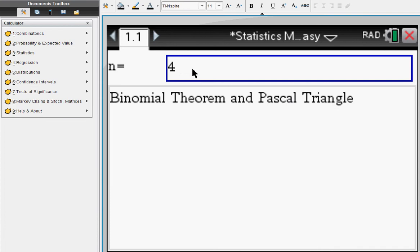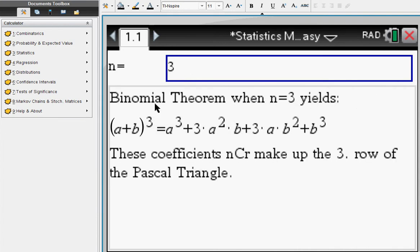Binomial coefficients. This is the binomial theorem expanded here for you, and you can recognize 1, 3, 3, 1. Those coefficients make up the Pascal triangle.